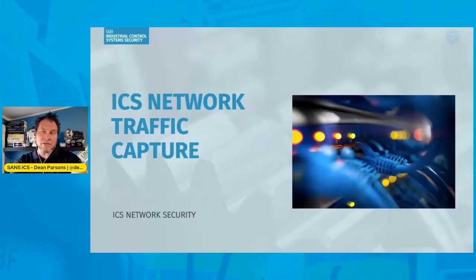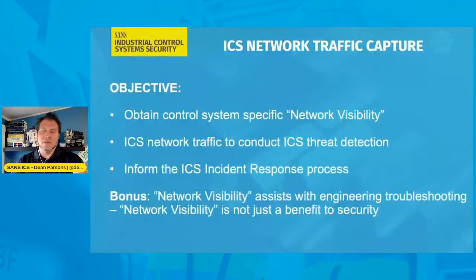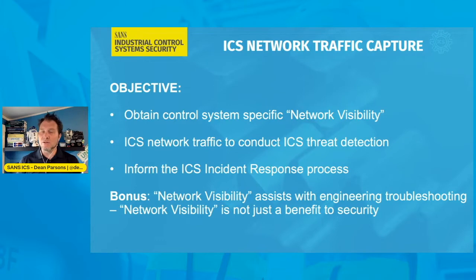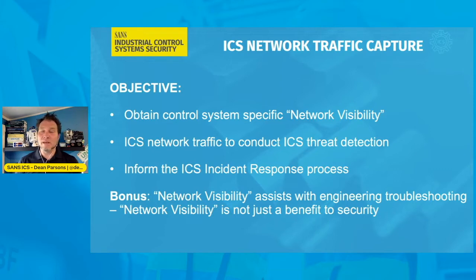Let's jump into our objective and the ways we can obtain this. Typically, the objective for network visibility is to get traffic from the control environment — in our case, to conduct things like ICS threat detection, also inform ICS-specific incident response processes. And the bonus: when you do get control system network visibility, this will also help the engineering staff with troubleshooting as well.